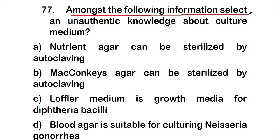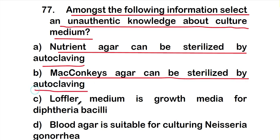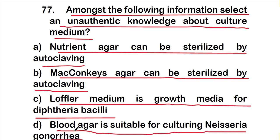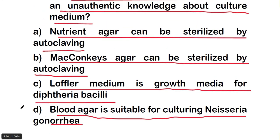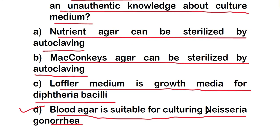Question number 77: Select an unauthentic statement about culture medium. Options are: A) nutrient agar can be sterilized by autoclaving, B) MacConkey agar can be sterilized by autoclaving, C) Löffler's medium is growth media for diphtheria bacilli, D) blood agar is suitable for culturing Neisseria gonorrhoeae. The right answer is option D — blood agar is not suitable for culturing Neisseria gonorrhoeae.